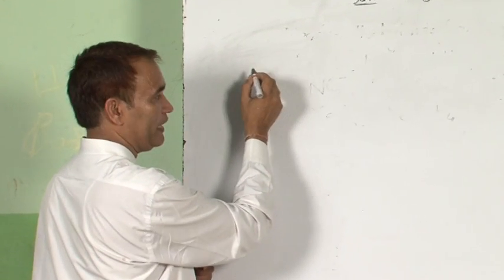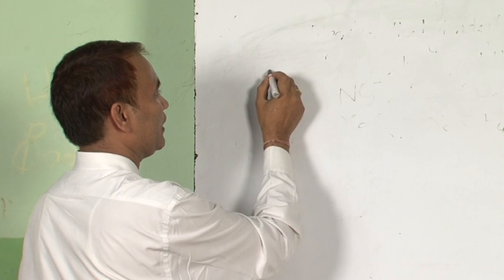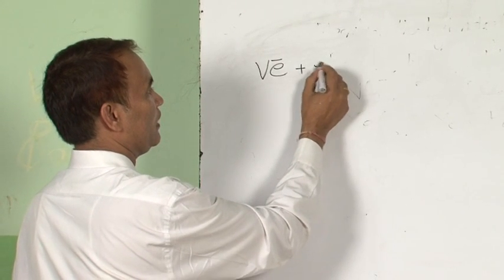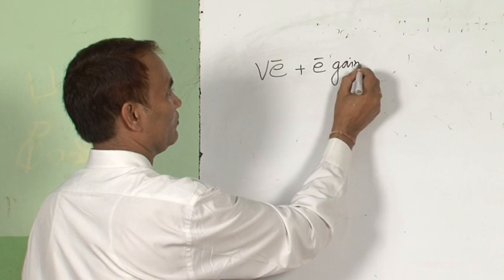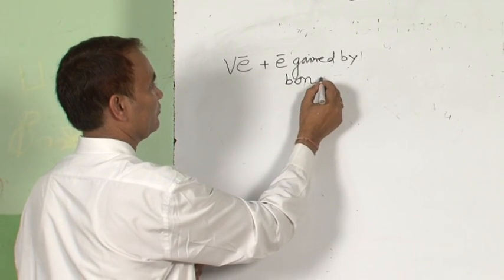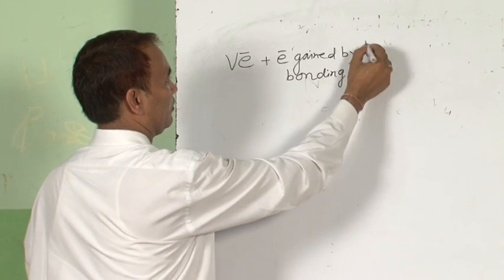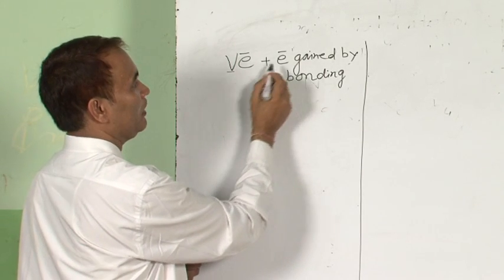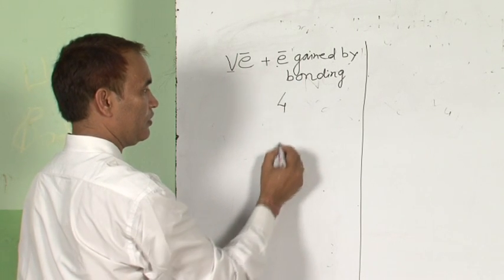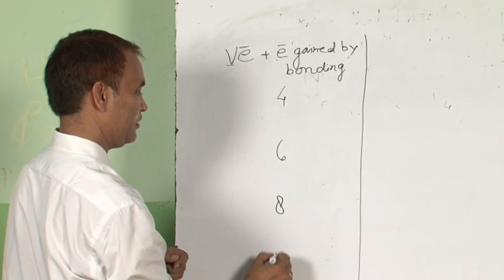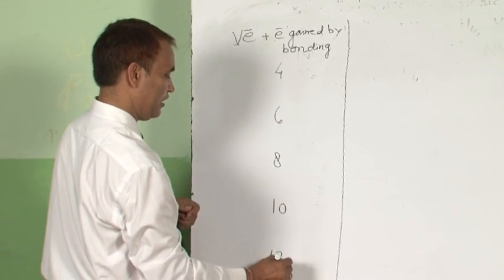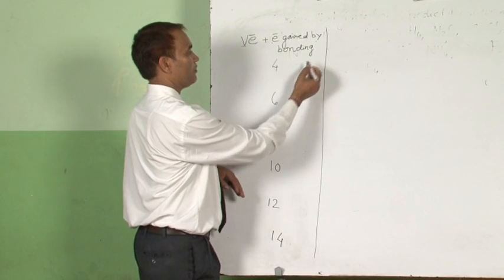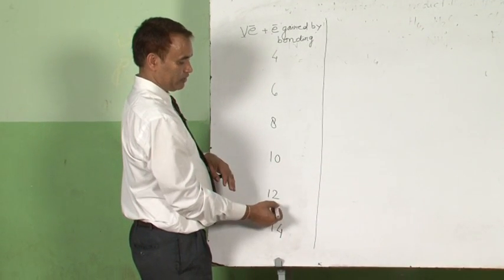We have to know the central atom of any compound — specifically, the valence electrons of the central atom plus the electrons gained by bonding, that is the bonded electrons. If these valence electrons of the central atom and electrons gained by bonding total 4, 6, 8, 10, 12, or 14 — we can convert these into electron pairs: 2, 3, 4, 5, 6, and 7 respectively.